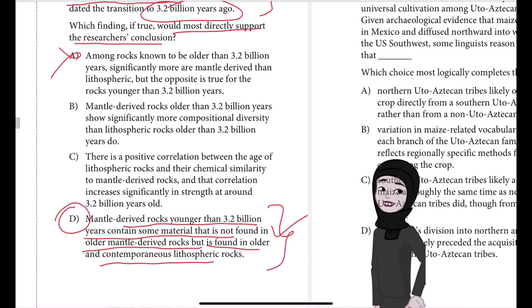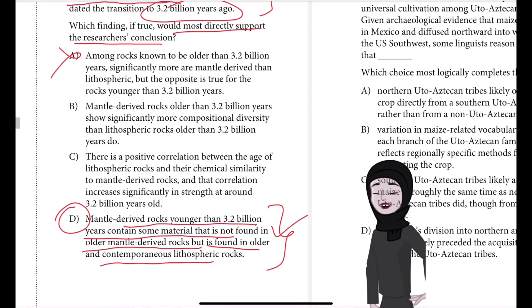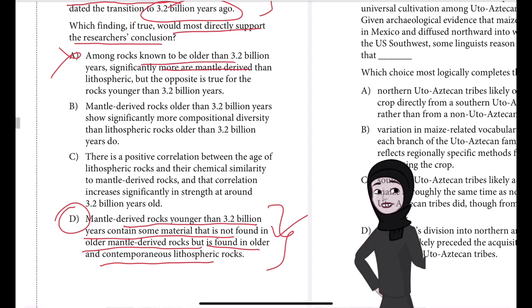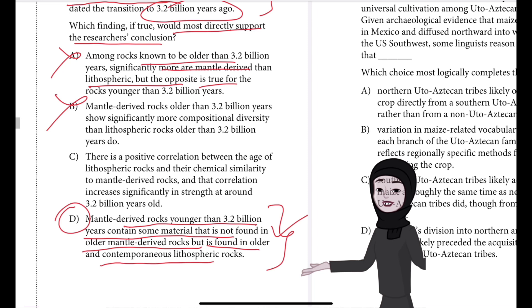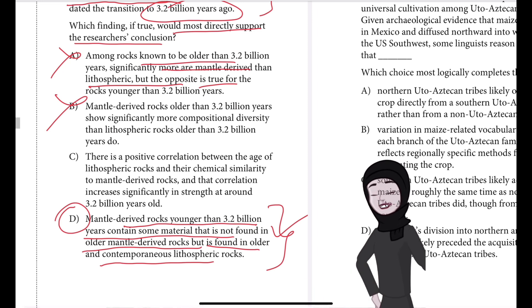Choice A is incorrect. The text gives no basis for comparing the quantities of lithospheric and mantle-derived rocks. Choice A is about quantity — more mantle-derived than lithospheric before 3.2 billion years and the opposite after — but that comparison is not mentioned in the text. That's why A is not correct.